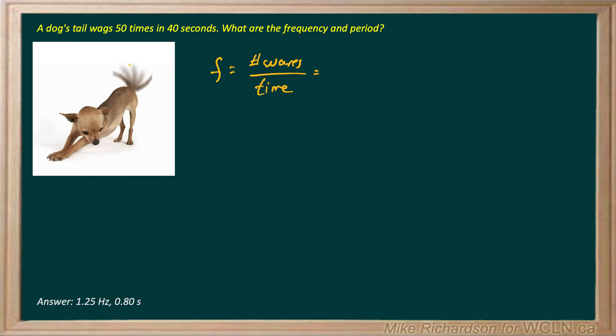So here we've got a tail wagging back and forth and one complete wave or one complete oscillation is when the tail starts here, goes all the way to the right and back. That defines one complete oscillation or wave as long as it's repeating itself.